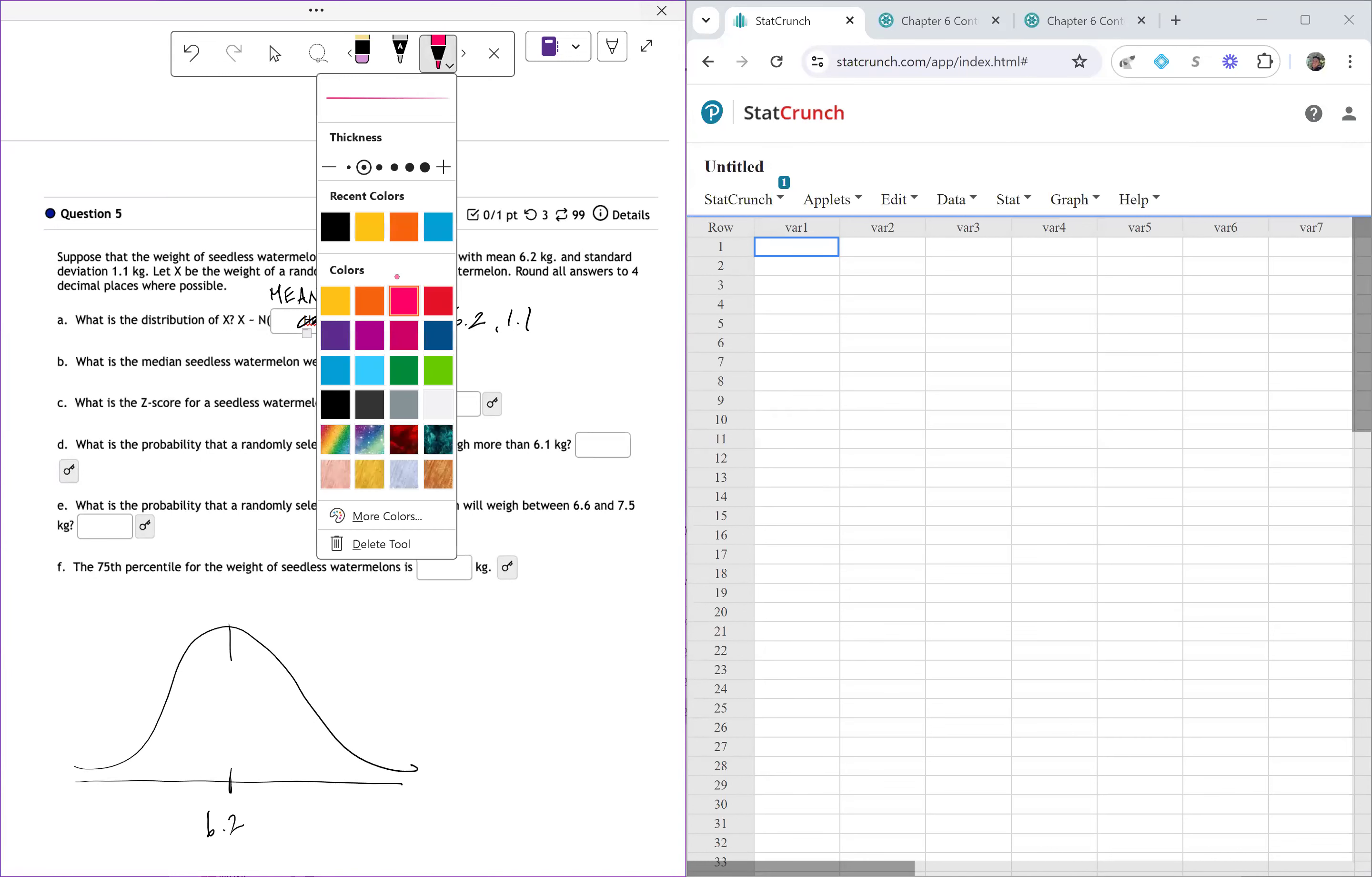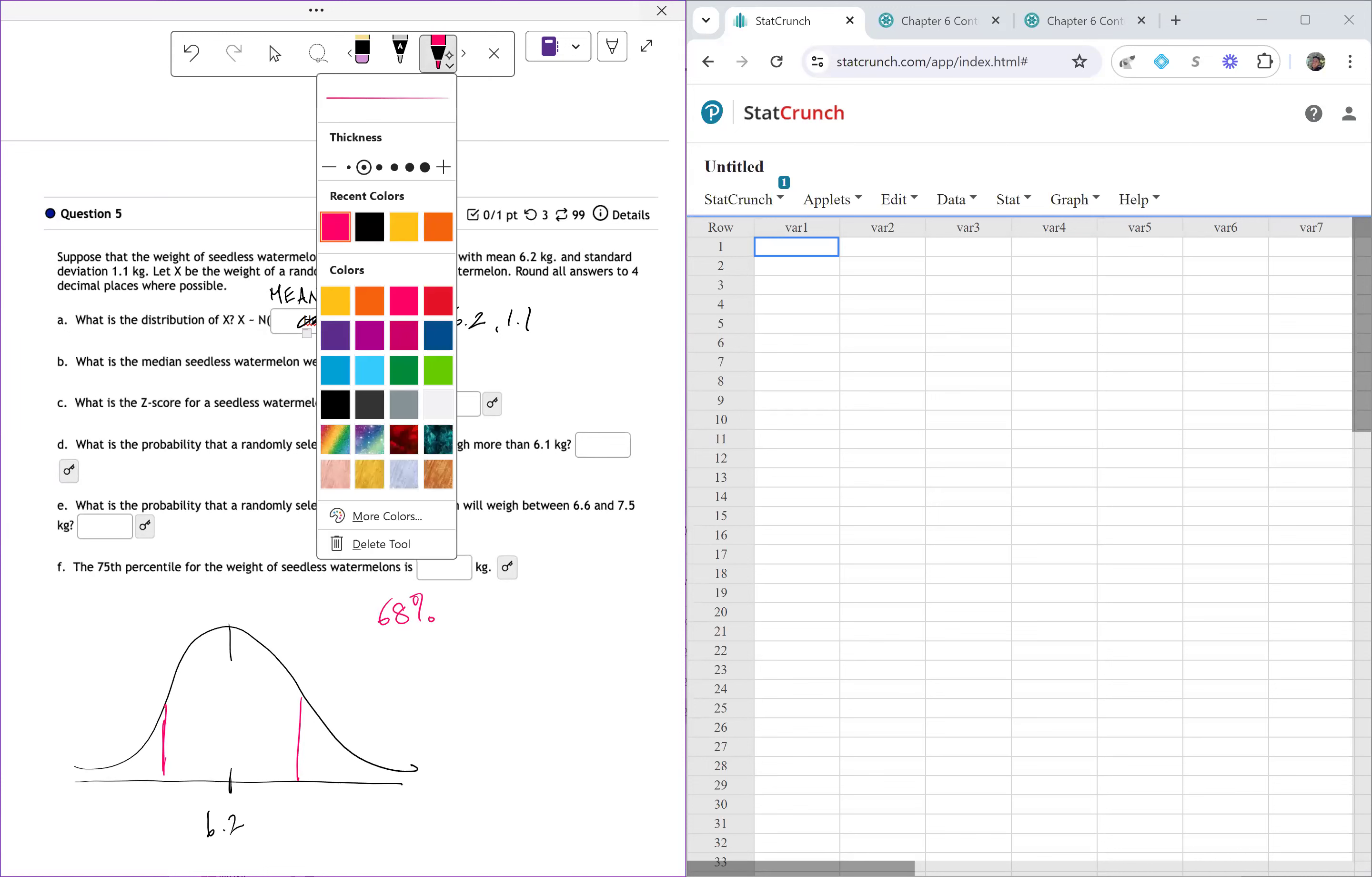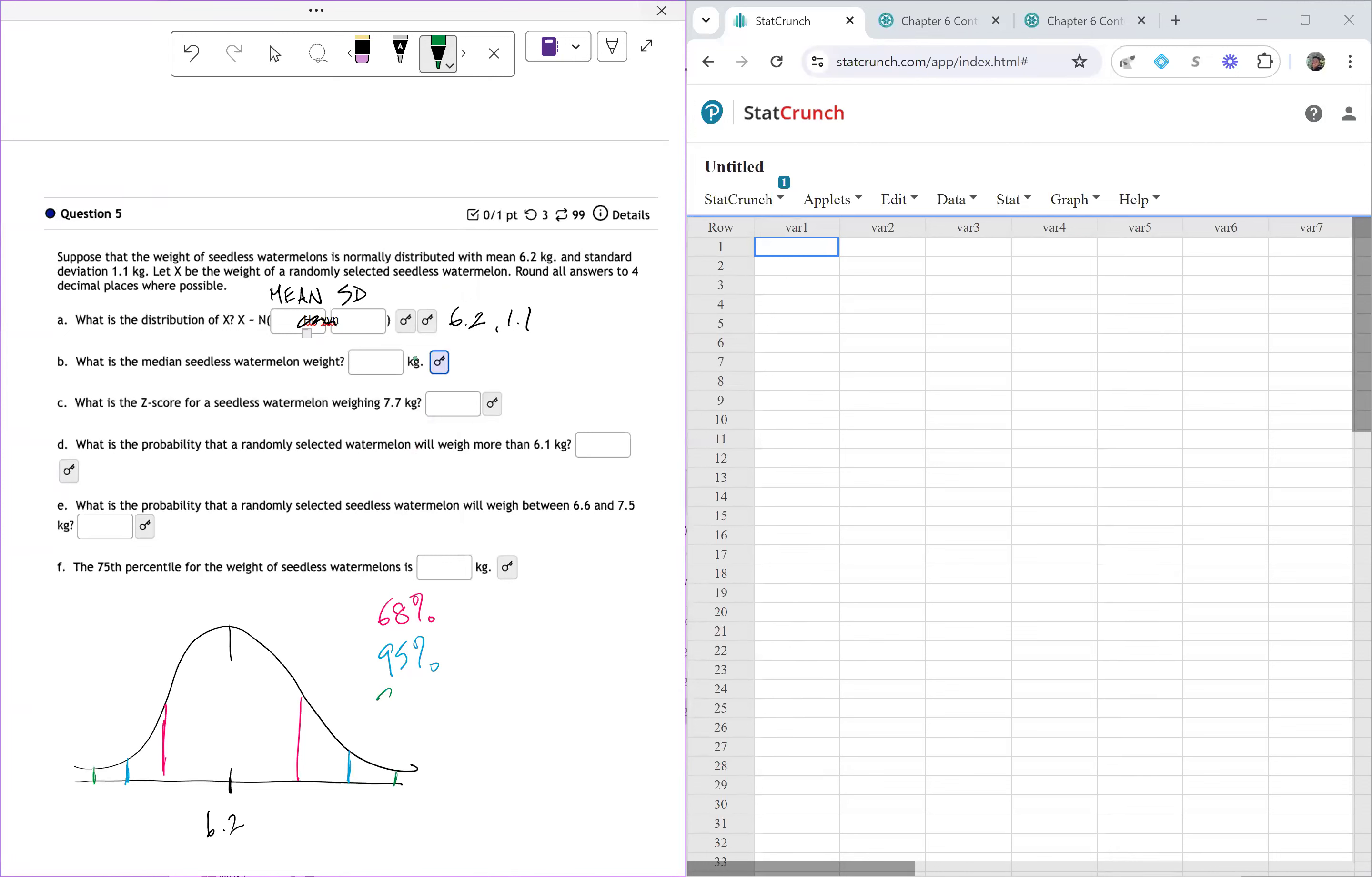From the last video, we know that if we go out like one standard deviation, we end up with 68% of our data falls within that first standard deviation out. When we go out two standard deviations, we actually end up at 95%. And if you go three standard deviations out, you're actually at 99.7% of the data falls within there. That's our empirical rule, and it's kind of helpful to remember.